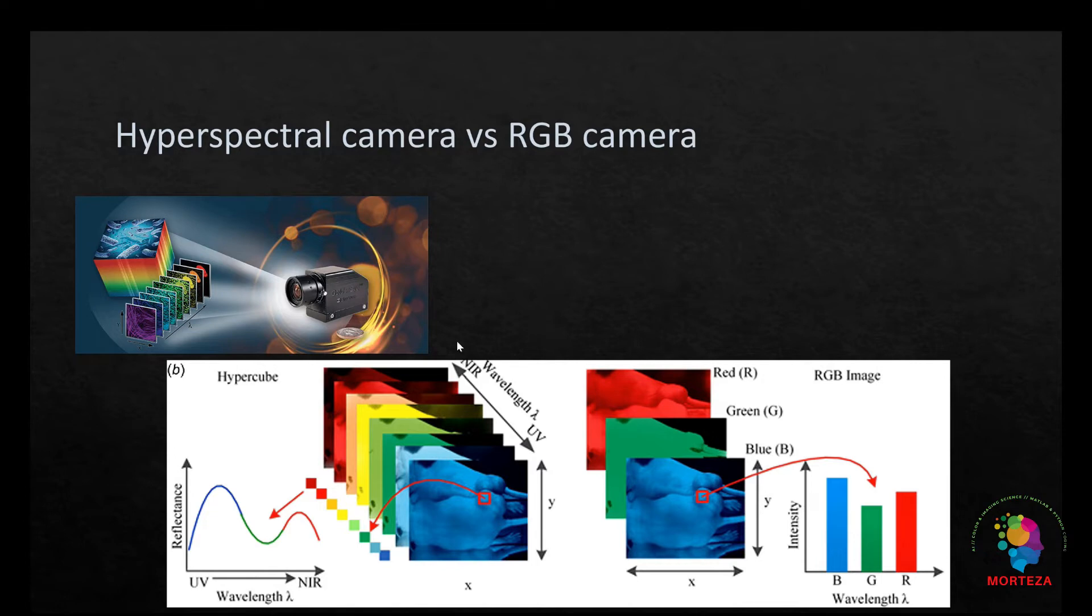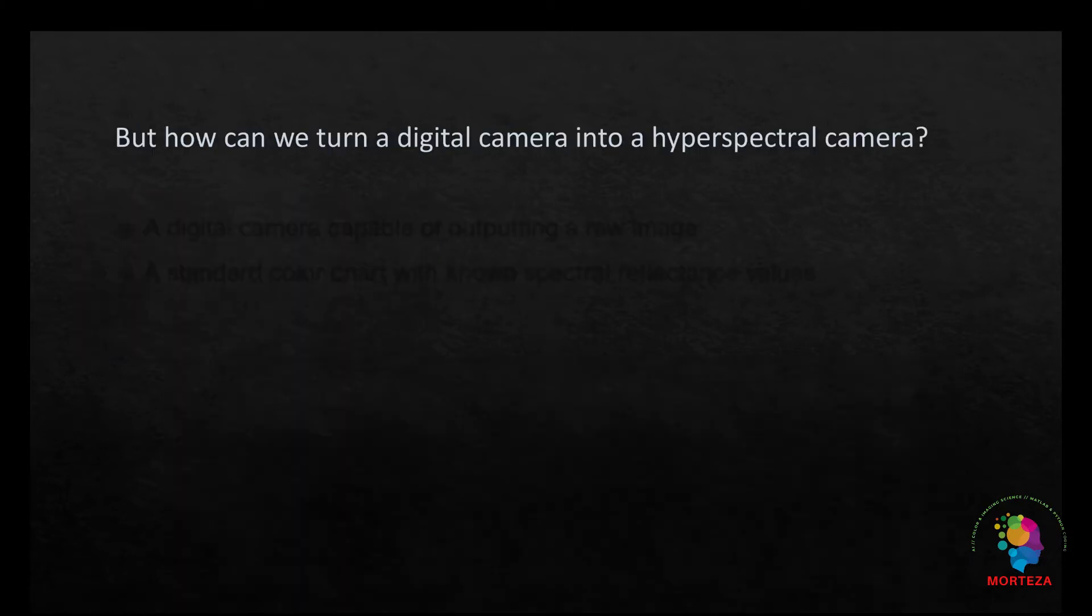As you can see, we only have three channels when it comes to ordinary digital cameras - red, green, blue - but when it comes to hyperspectral camera, we have a lot more than that, and it will cover the whole spectrum that we are showing here.